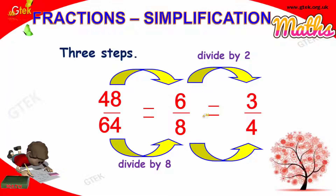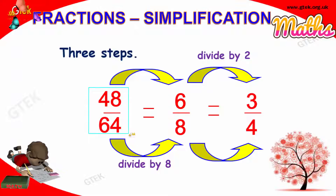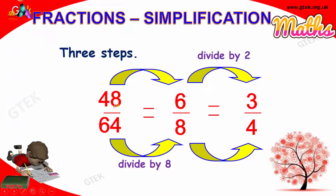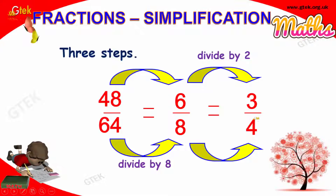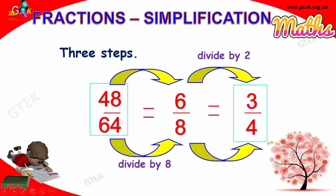Simplification can be done in multiple steps, especially when numbers are really big. For example, 48 divided by 64 — both are divisible by 8. 48 divided by 8 is 6, and 64 divided by 8 is 8, giving 6 by 8. Then dividing by 2: 6 divided by 2 is 3, and 8 divided by 2 is 4. So the final answer for 48 divided by 64 is 3 by 4.